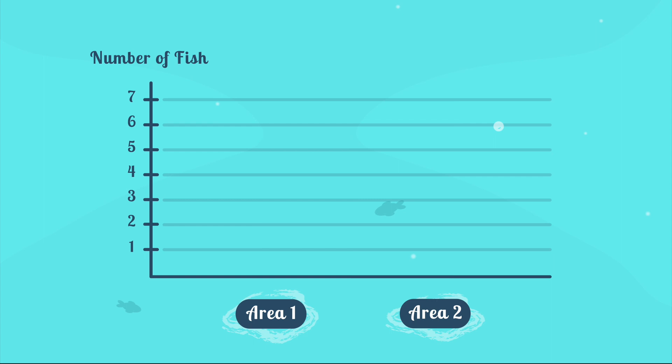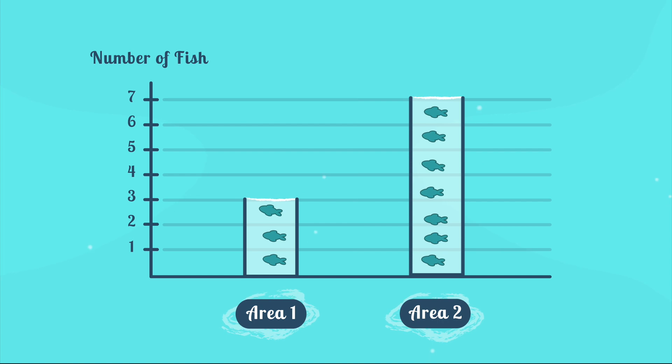Using the numbers we just calculated we're going to fill these bars in. Now here's the average number of fish we found in area number one. And here is the average number of fish we found in area number two. The bigger the bar, the more fish in the area. Can you tell which area had more fish?